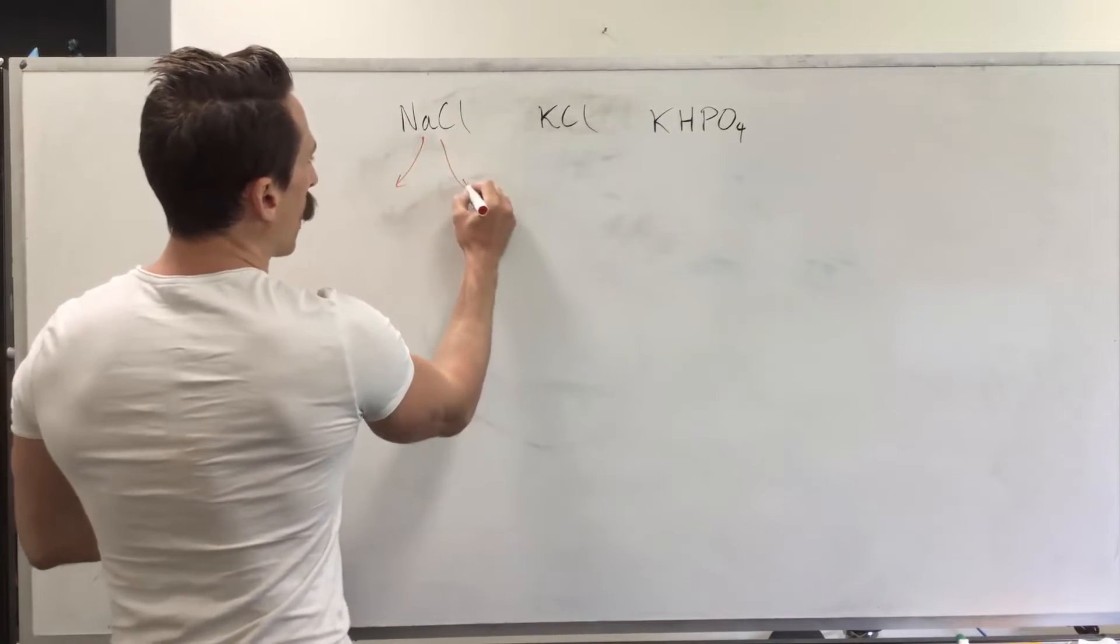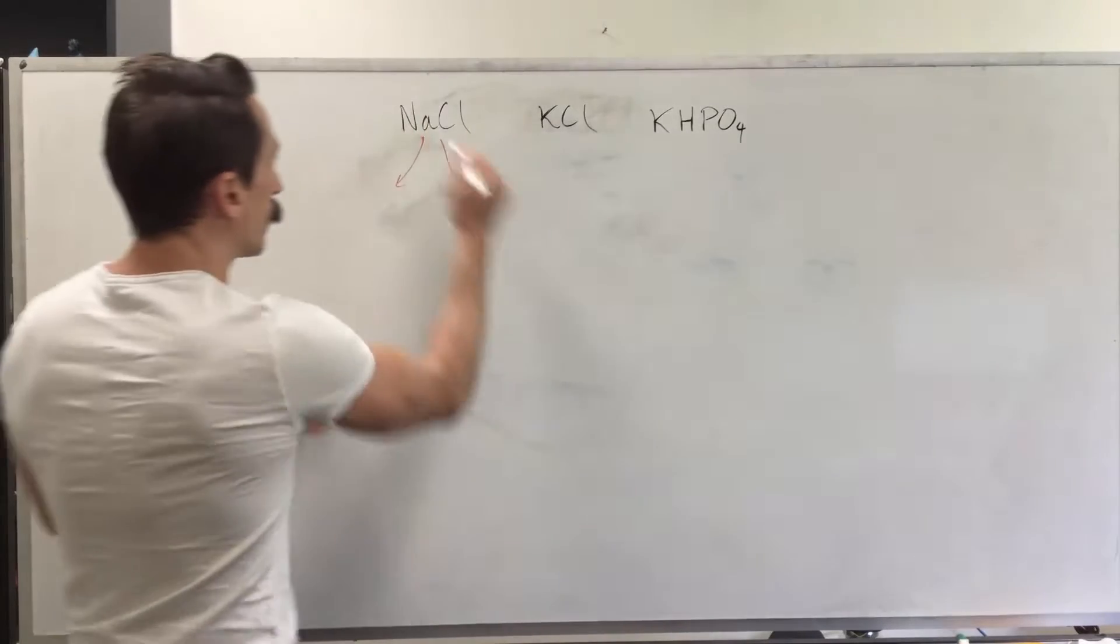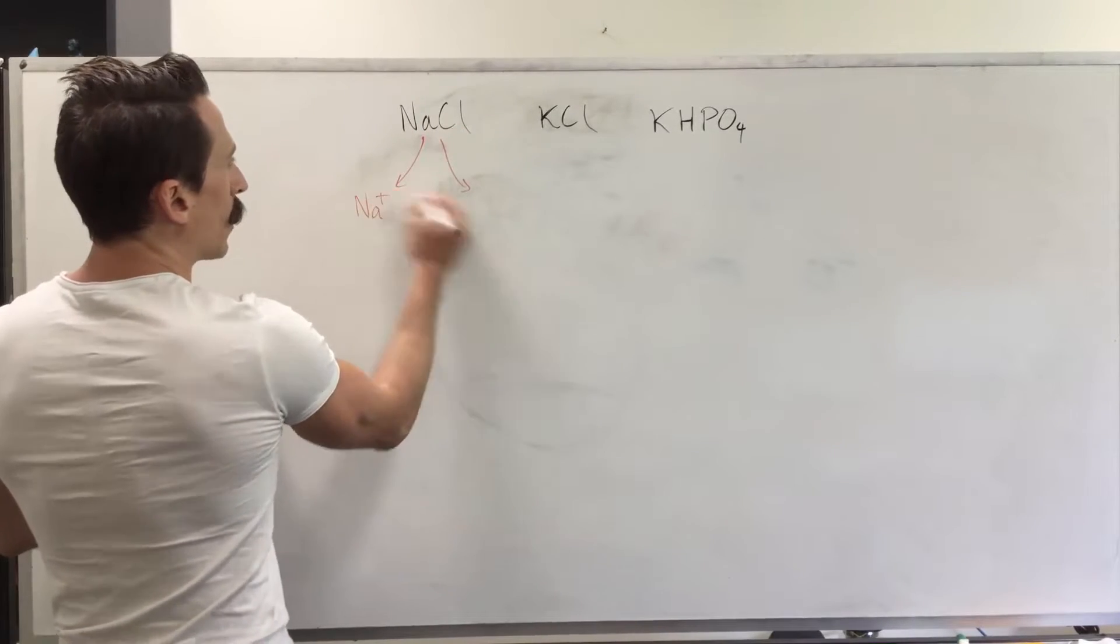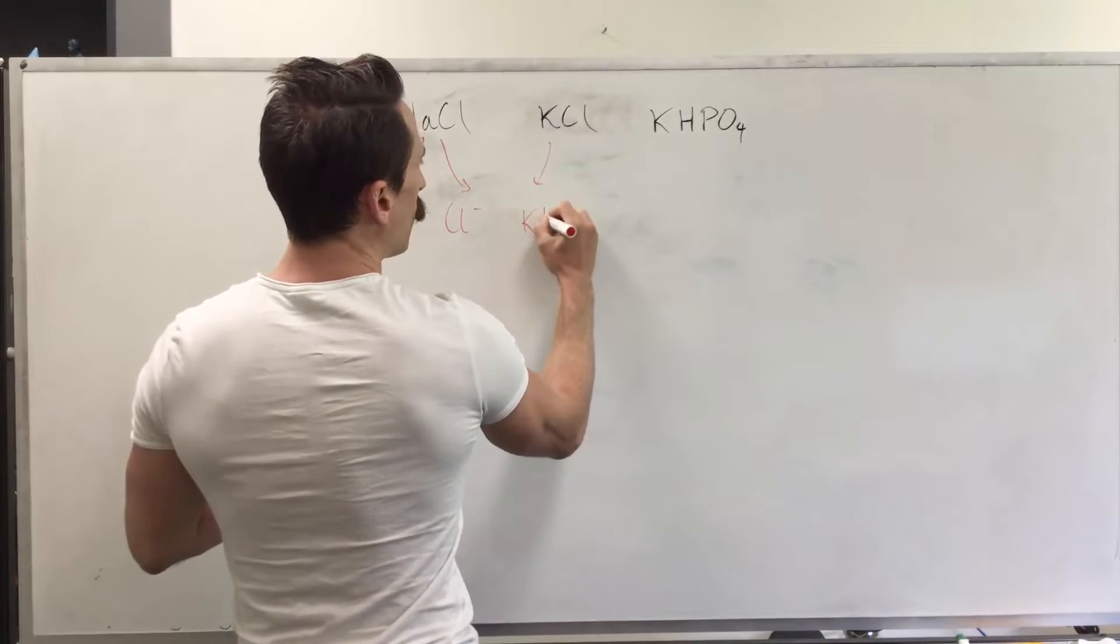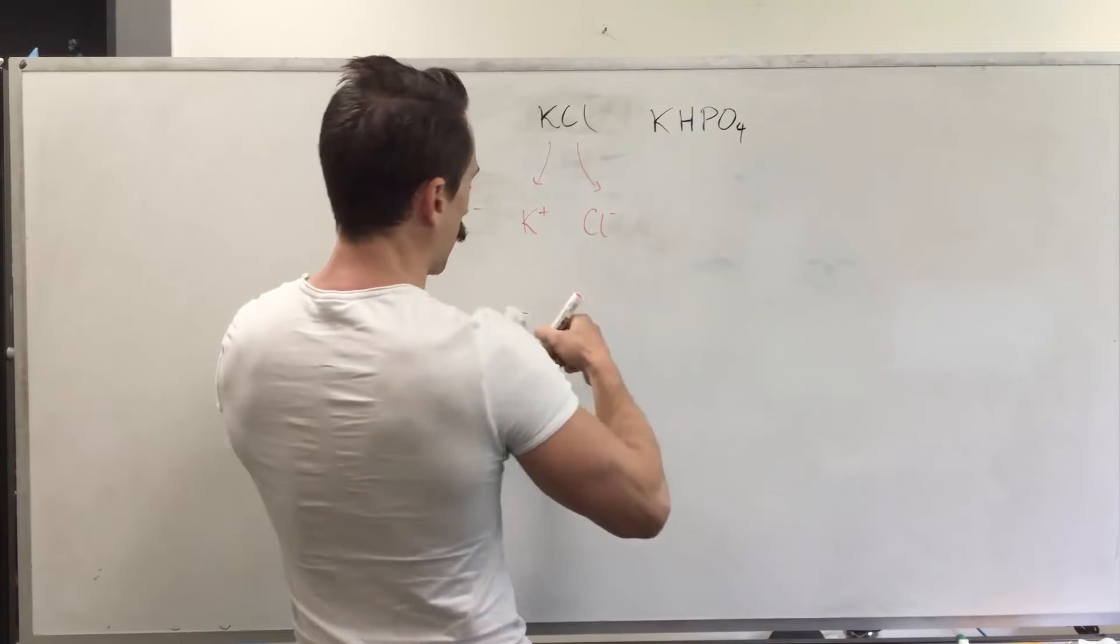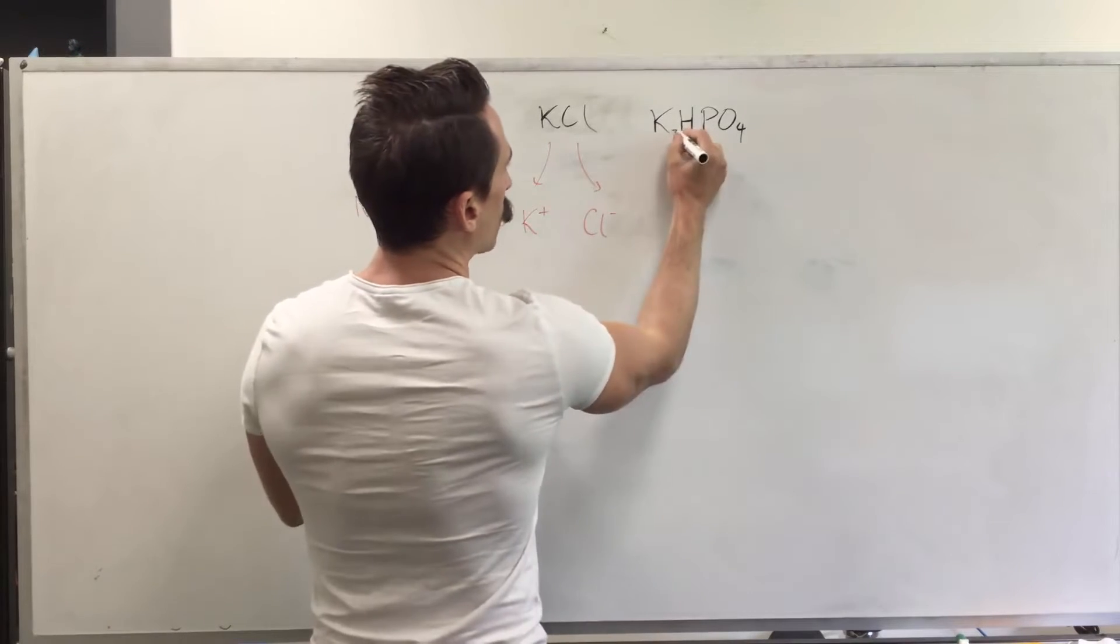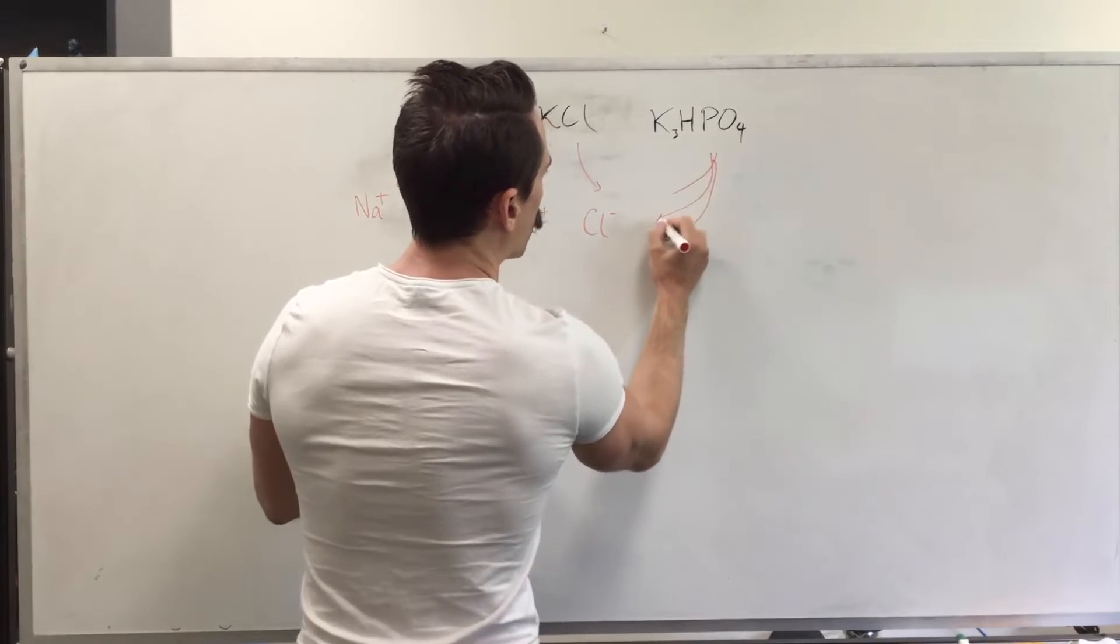These electrolytes, when exposed to water, split apart and form charged atoms or elements that we call ions. For example, sodium turns into Na+, chloride Cl-, potassium K+, chloride Cl-. Potassium phosphate—in fact, if this is tri-potassium phosphate, which is important—it's going to form three potassium ions and phosphate.